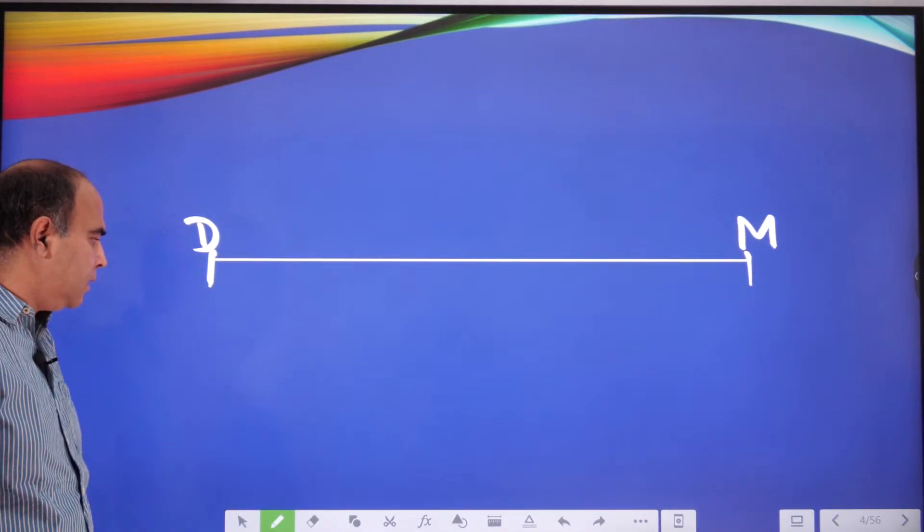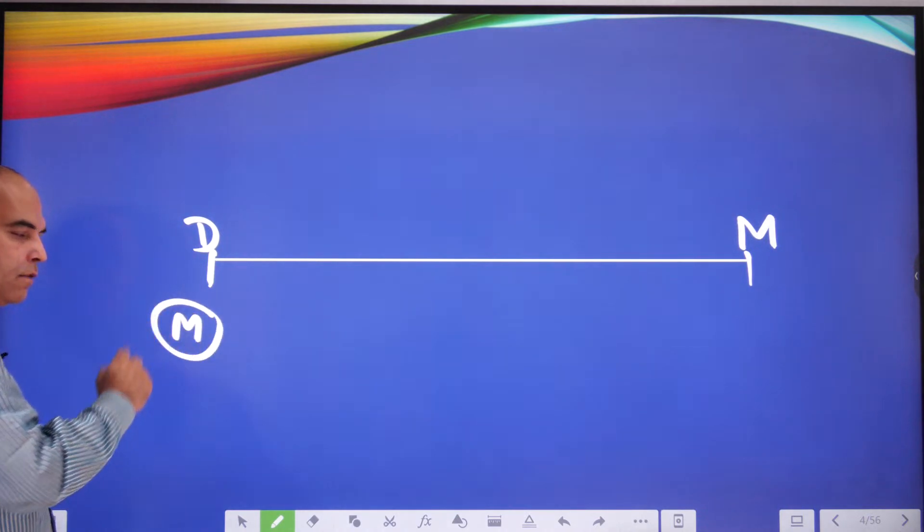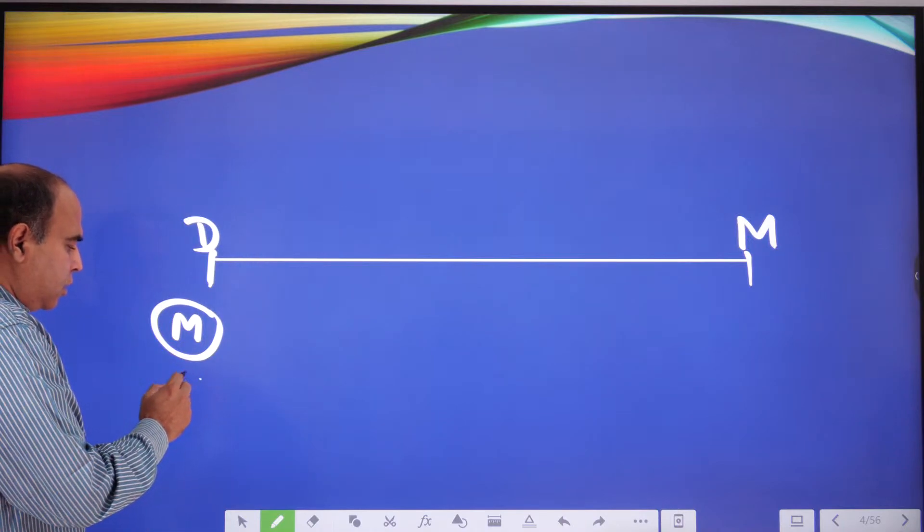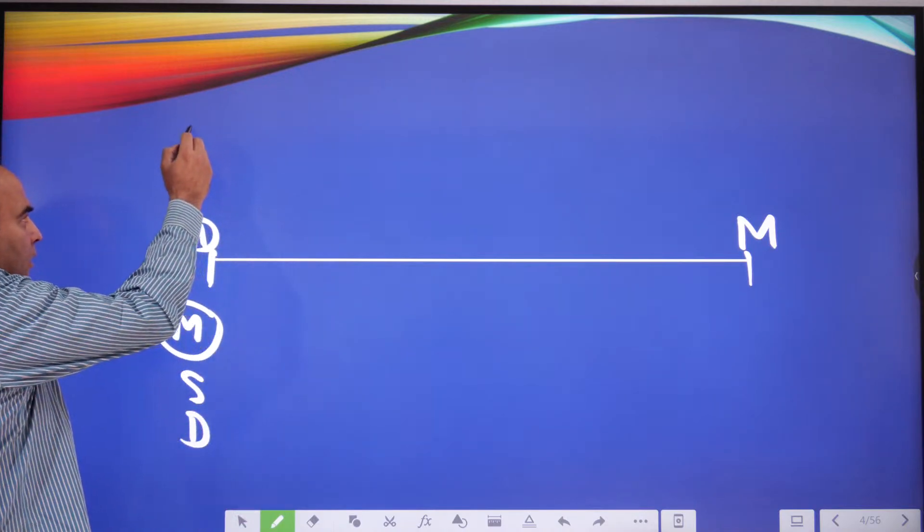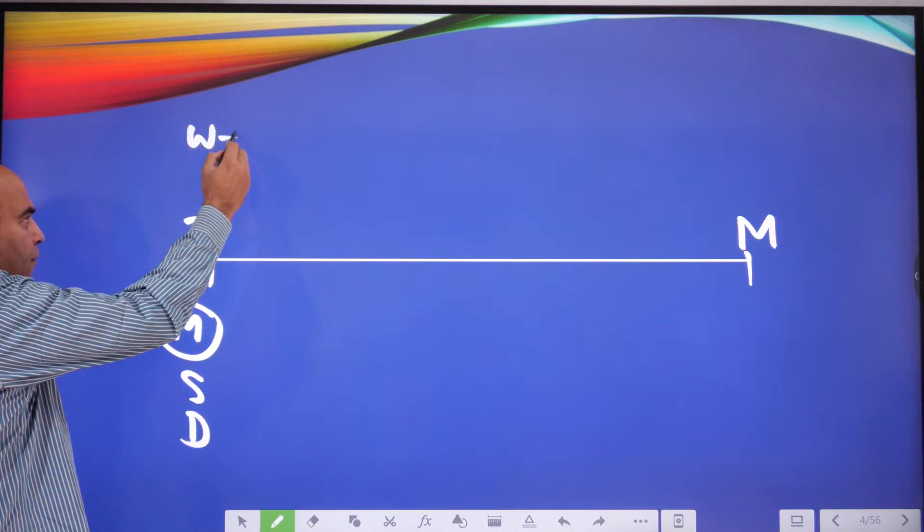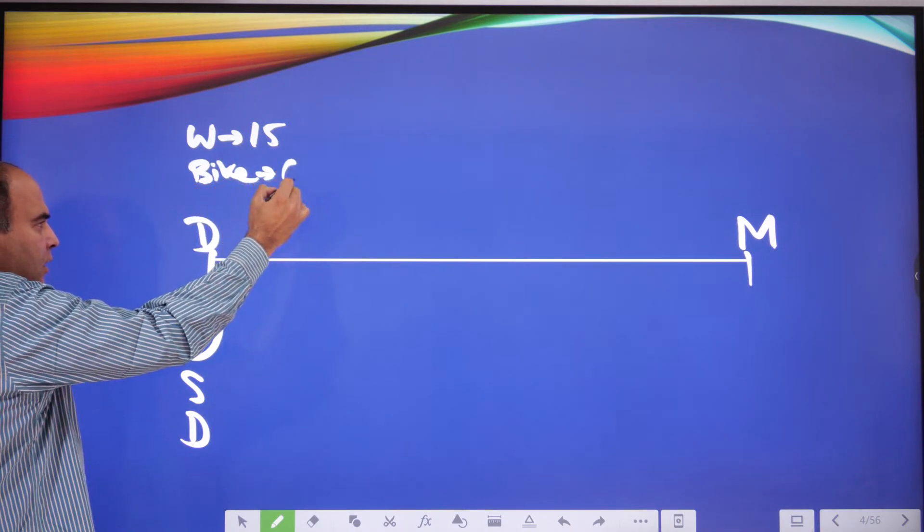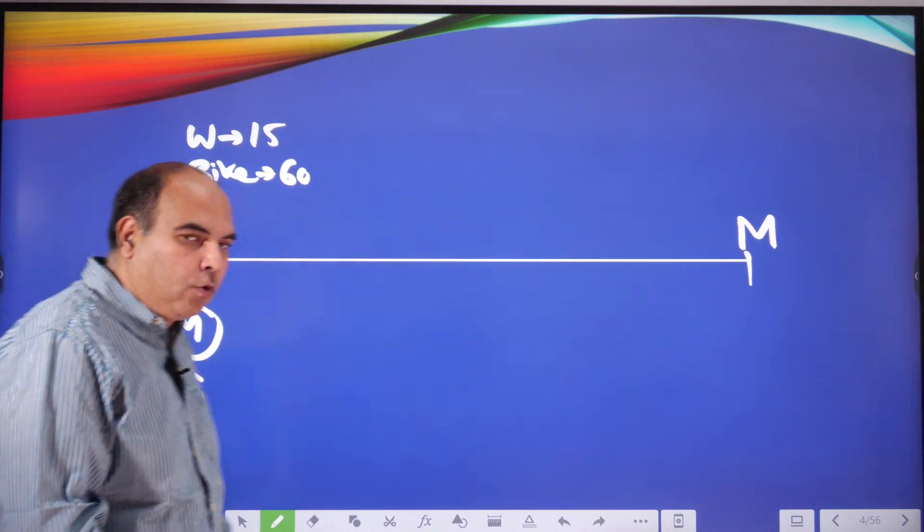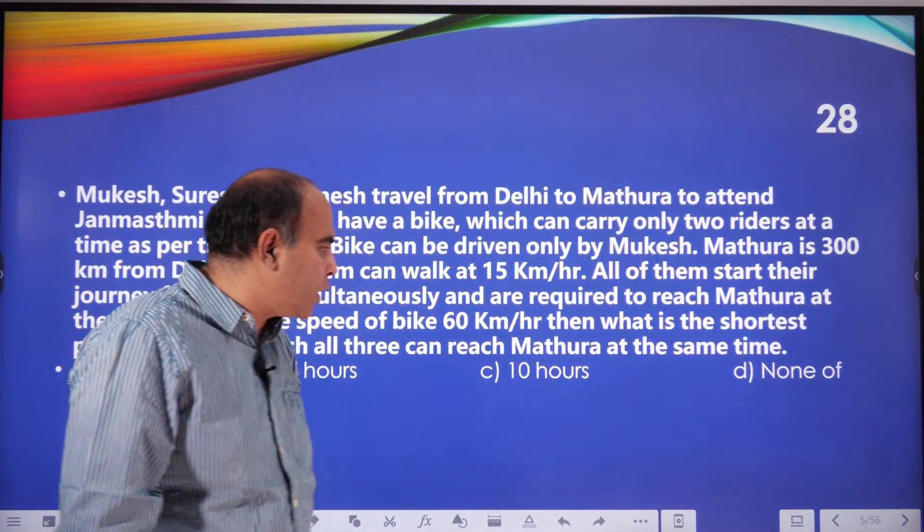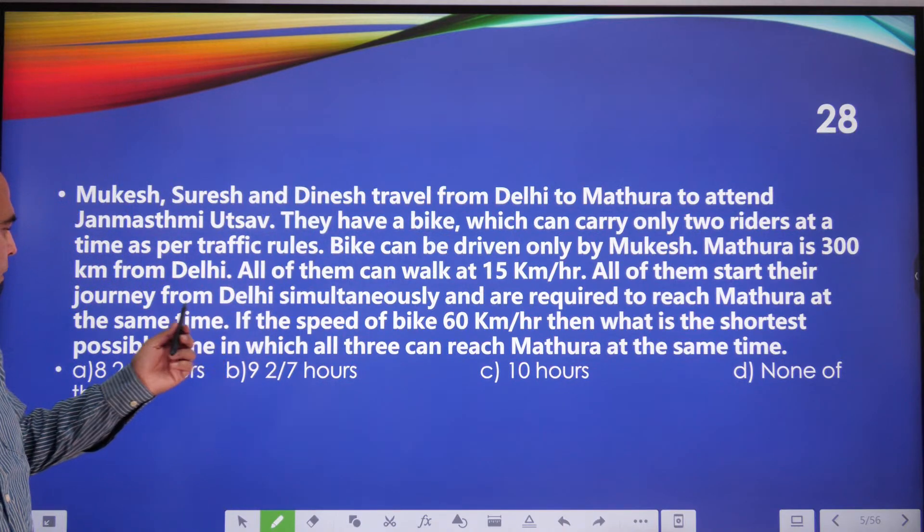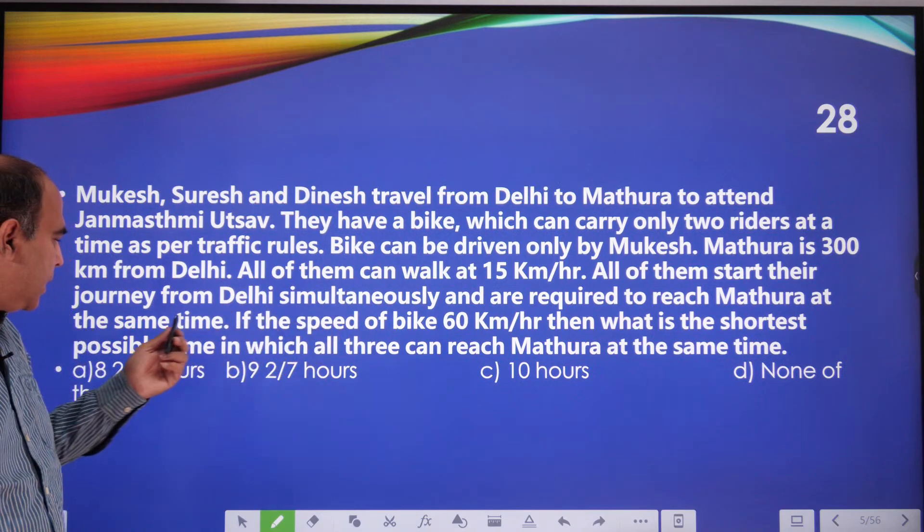On the other side you've got Delhi and Mathura and you've got three people: Mukesh, who is the bike rider, Suresh and Dinesh. The walking speed for all of them is 15 and the bike speed given a little bit later in the question is 60. So if I go further with respect to the question, it's telling me that all of them start the journey from Delhi simultaneously and are required to reach Mathura at the same time. That means all three should reach at the same time.